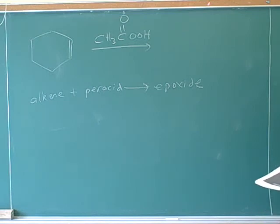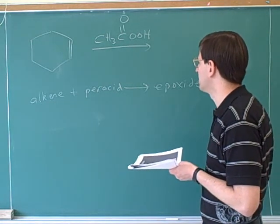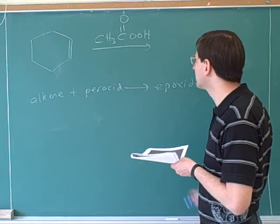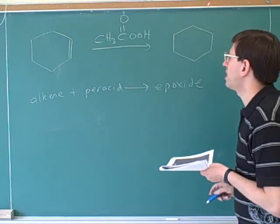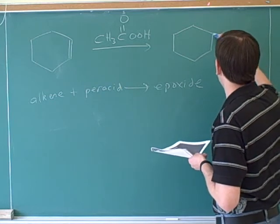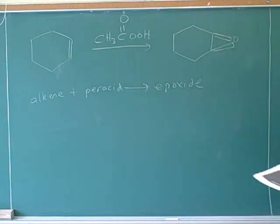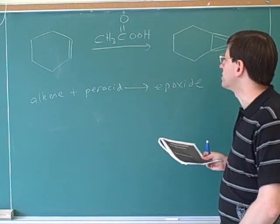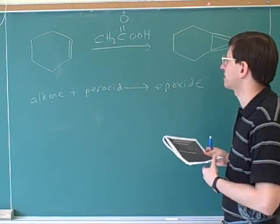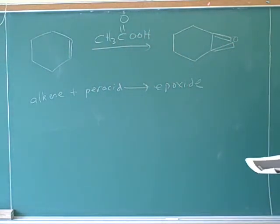E1 and E2 are the main ways we've learned to make carbon-carbon double bonds. It's always good to think about how we can make the intermediates we might need. The product here shows how we make the epoxide — we're simply turning the double bond into a three-membered ring.